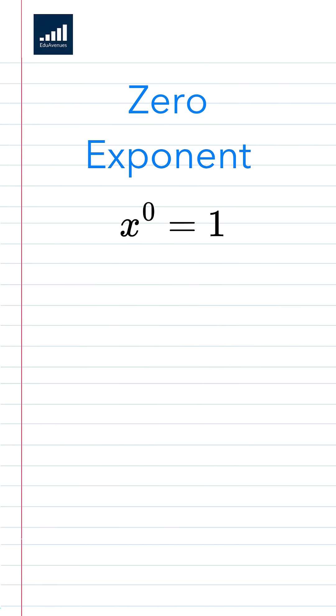Rule number four, zero exponent. Any non-zero base raised to the zero power is equal to one. Two times a to the zero, that's two times one, which is equal to two.